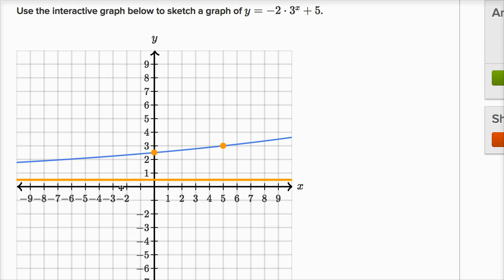We said as x becomes more and more negative, y is going to approach five. So let me put this up here. So that's our asymptote.